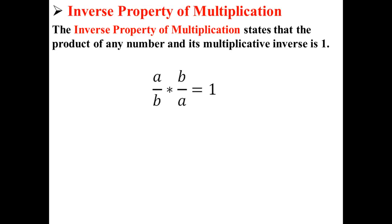So for example, if you have one number, a over b, and its inverse would be b over a, if you multiply those two values, you get 1.